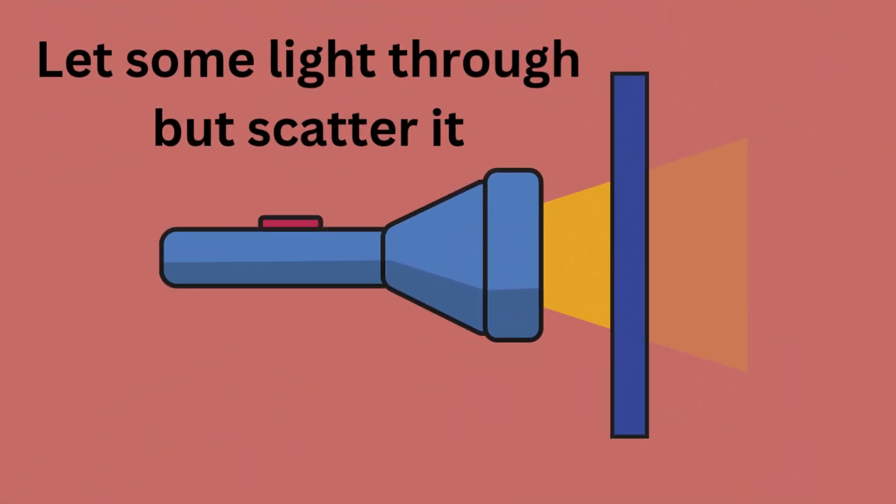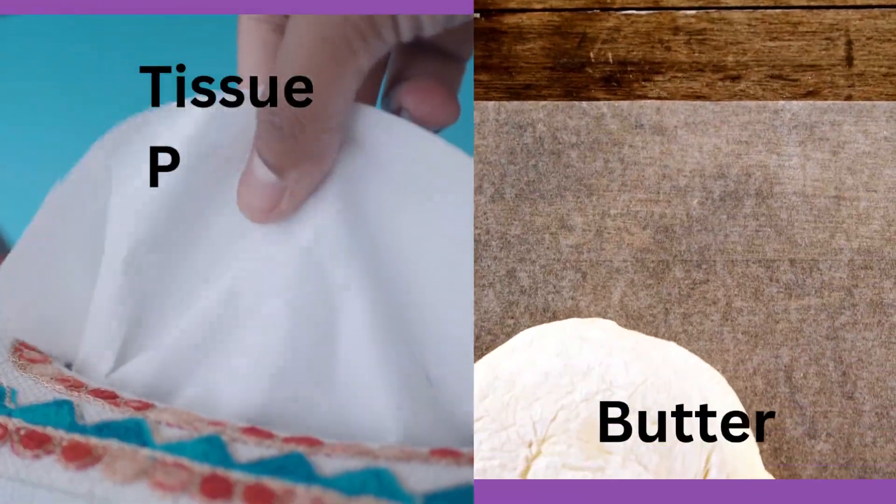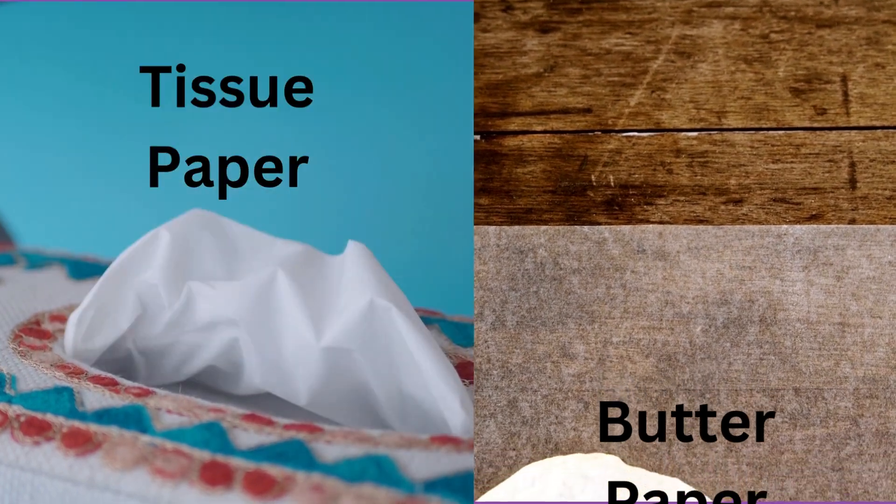Translucent objects let some light through but scatter it, so things look blurry. Ever seen frosted glass, tissue paper, or butter paper? That's translucent.